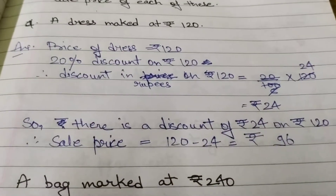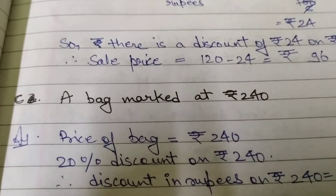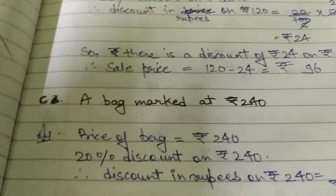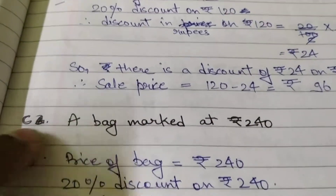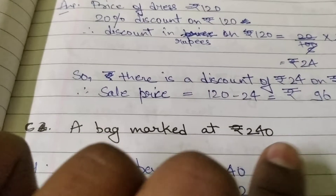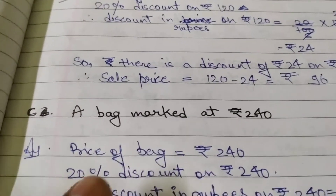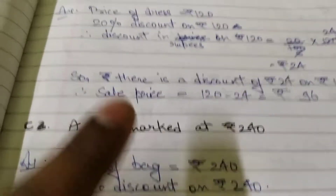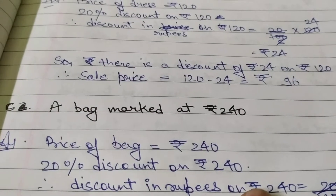The sale price will be 120 minus 24, which equals rupees 96. That is the answer for Part A. Now Part B: a bag marked at rupees 240, same question — find the sale price with 20% discount.